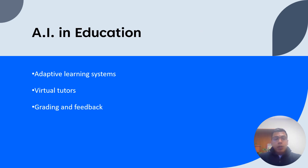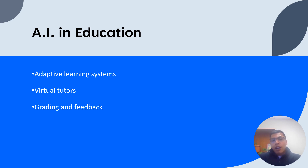AI is also revolutionizing the education sector by personalizing learning experiences, enhancing teaching methods, and automating administrative tasks. We'll discuss three key applications: adaptive learning systems, virtual tutors, and grading and feedback. The first, adaptive learning systems: AI-powered learning platforms can analyze student performance data and adapt content delivery to individual learners, ensuring that each student receives a tailored learning experience, which in our day and age is more important than ever. These systems can identify knowledge gaps, recommend learning materials, and adjust the pace and difficulty of instruction accordingly.